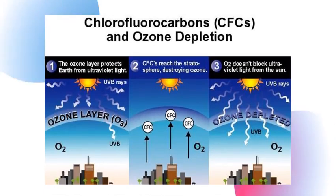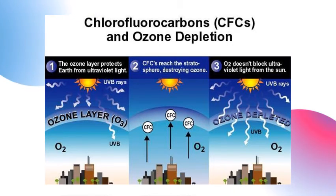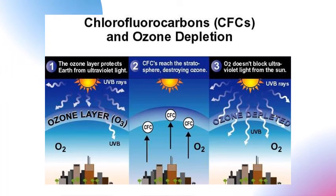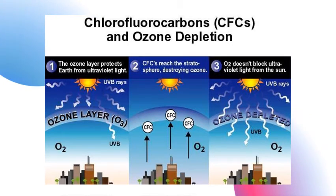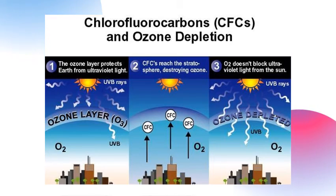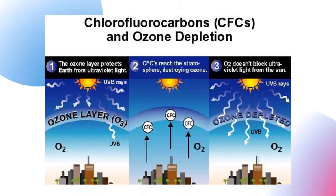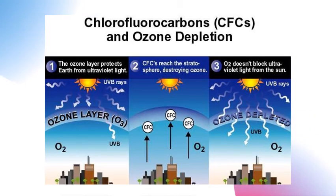We need to consider the effect of CFCs in our atmosphere — chlorofluorocarbons and ozone depletion. We already know that the ozone layer protects the Earth from UV (ultraviolet) light. However, the usage of CFCs reaches the stratosphere and destroys the ozone. That is why the ozone is depleted and no longer blocks UV light from the sun — that is the effect of CFCs in our atmosphere.